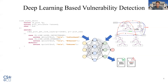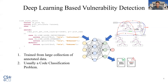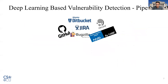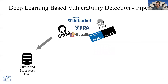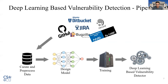A deep learning-based vulnerability detector implements such an analyzer using a deep neural network. Such a network is trained on a large collection of annotated vulnerability data and formulates the problem of vulnerability detection as a code classification task. A typical pipeline for deep learning-based vulnerability detection involves curating and pre-processing the data from different databases, designing and building suitable models, training the model, and finally evaluating the model on detecting real-world vulnerabilities.